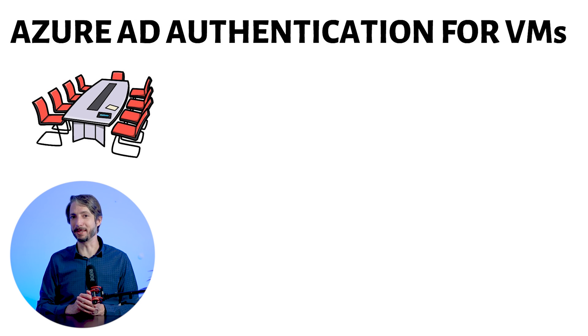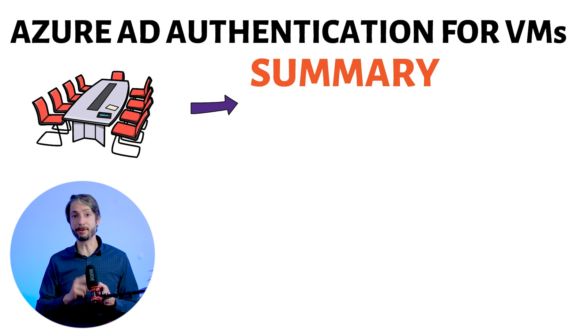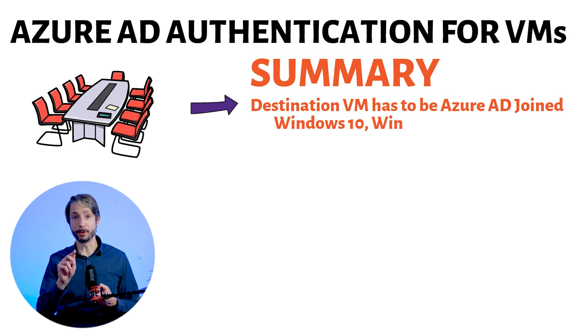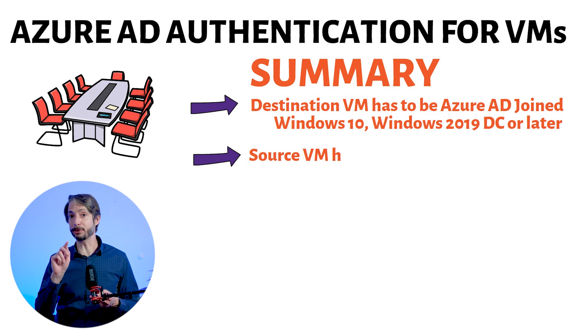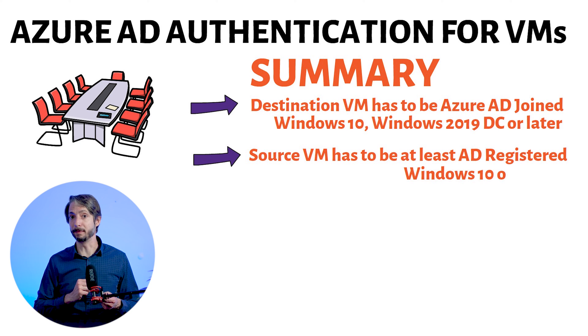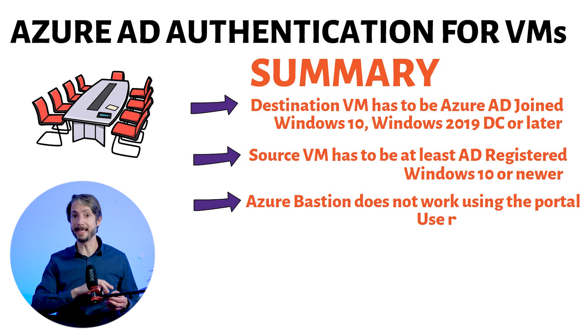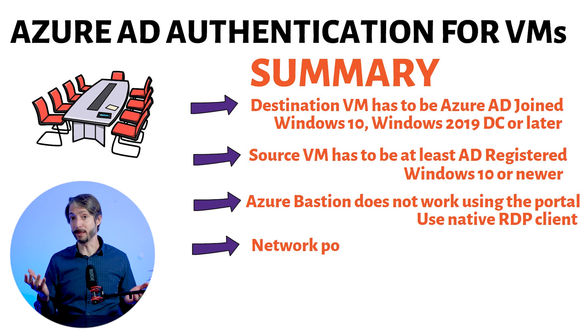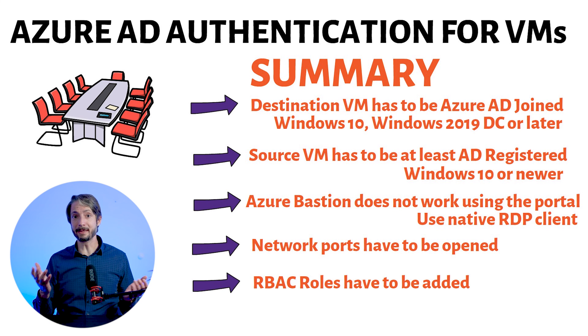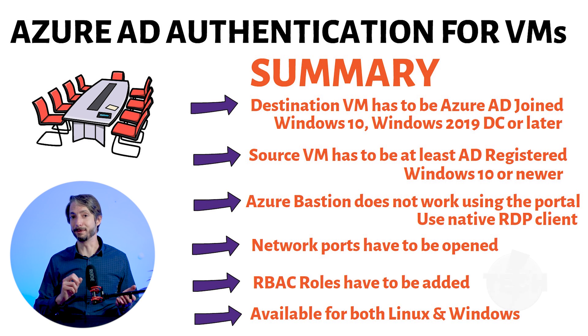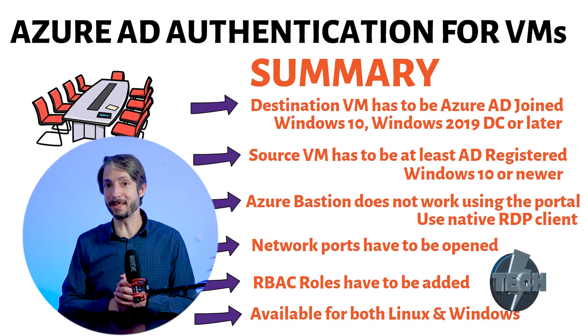Having seen this in action, we can summarize what we learned. The destination VM has to be Azure AD joined using Windows 10 or Windows 2019 Datacenter or later. The source VM has to be at least Azure AD registered using Windows 10 or newer. Azure Bastion is not compatible with Azure AD authentication through the portal — you must use the native RDP client. Network ports have to be opened, RBAC roles have to be added, and this is available for many Linux distributions as well. You can also integrate conditional access policy and multi-factor authentication, opening up many possibilities for an extra layer of security.